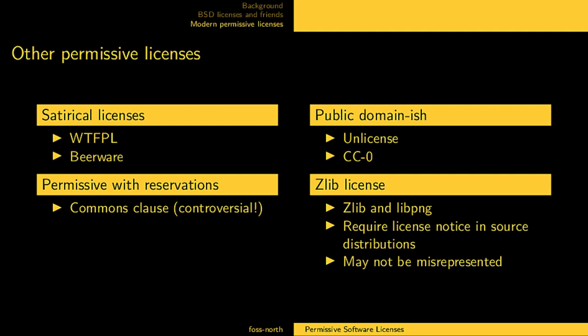On the topic of permissive-with-reservations, that might deserve its own episode. An example is the Commons Clause, which is a clause you can add to a license that says: apart from what the license grants, you are not allowed to sell the software. It's similar to the Creative Commons Non-Commercial license, which by definition isn't an open source license. This caused a lot of controversy, which is worthy of its own episode — perhaps with a lawyer.